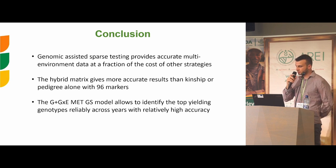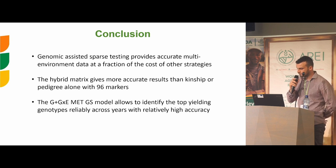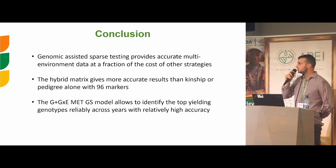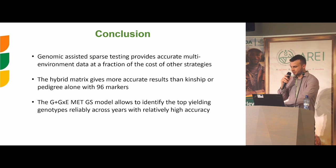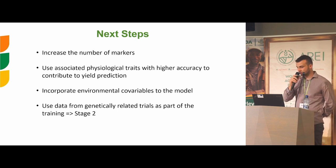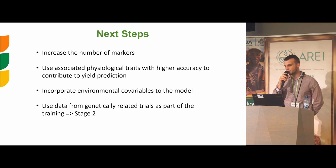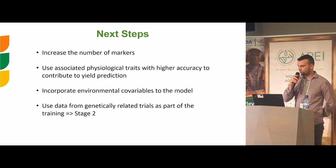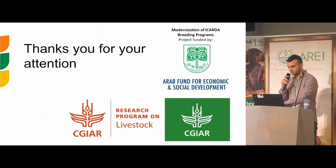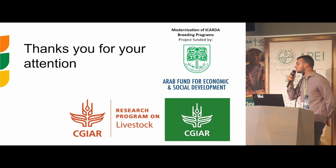Conclusions: genomic-assisted sparse testing provides accurate multi-environment data at a fraction of the cost of other strategies. The hybrid matrix gives more accurate results than KASP or pedigree alone, with 90 KASP markers. The multi-environment generation model allows identification of top genotypes with relatively high accuracy. Next steps include increasing the number of markers, associating phenological traits with higher correlation to yield prediction, incorporating environmental co-variables, and using data from genetically related trials — such as stage two — as part of the training set.